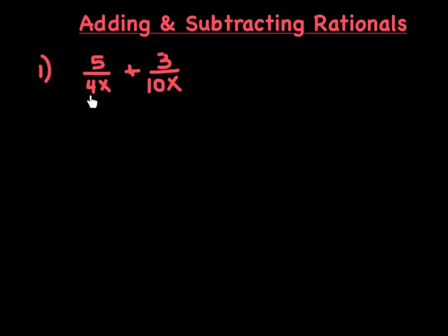So if we were to list out the multiples of 4 — 4, 8, 12, 16, 20, and so on — and then the multiples of 10 — 10, 20, 30, 40 — the smallest number that they have in common is 20. So what I'm going to do is put a 20 in our common denominator.